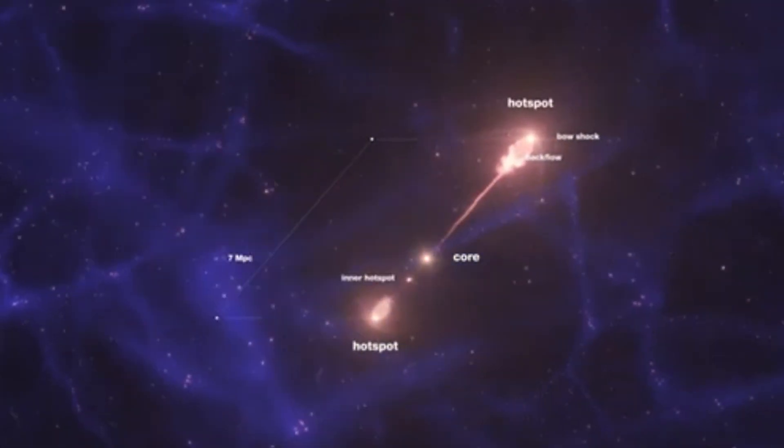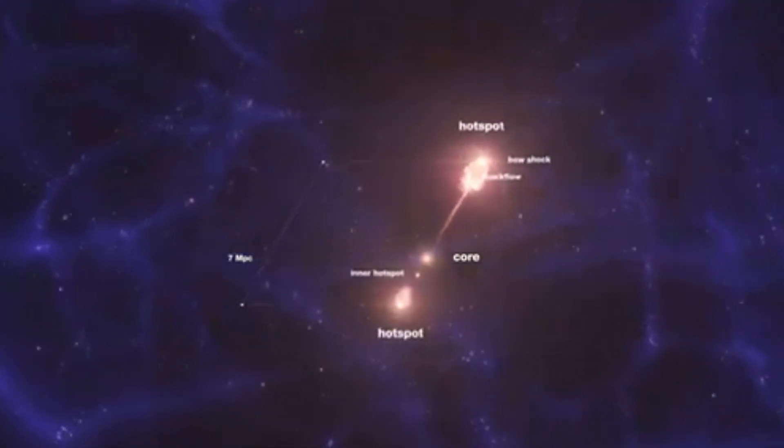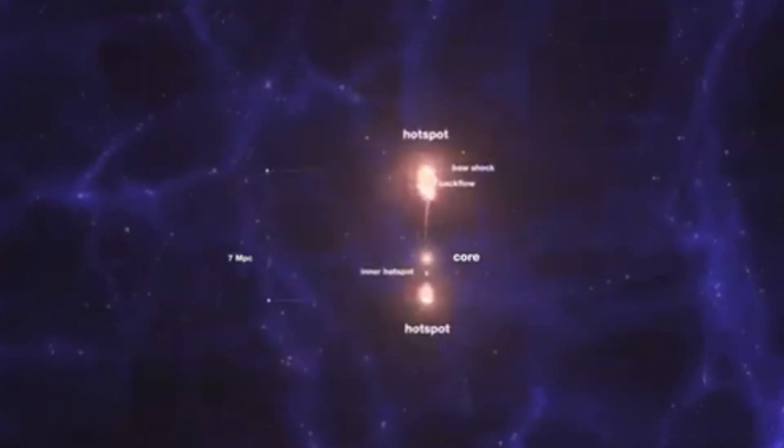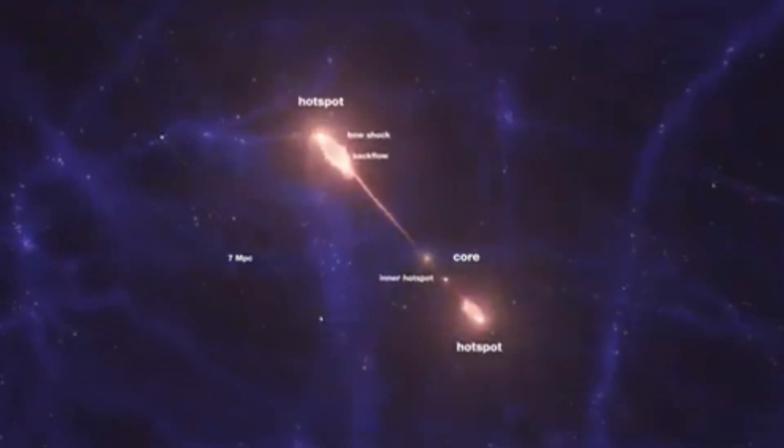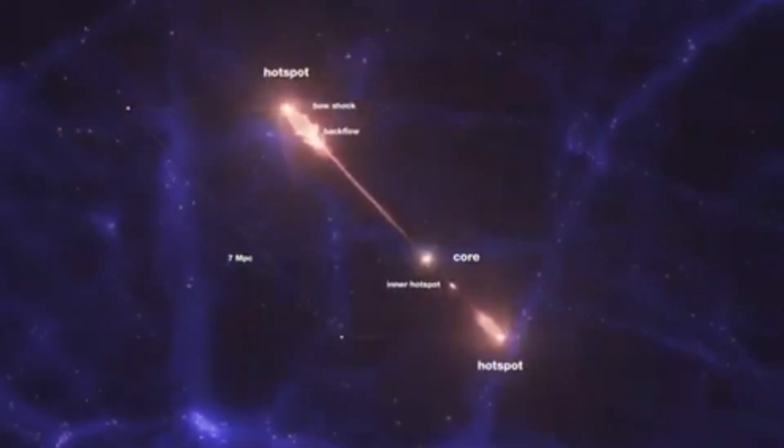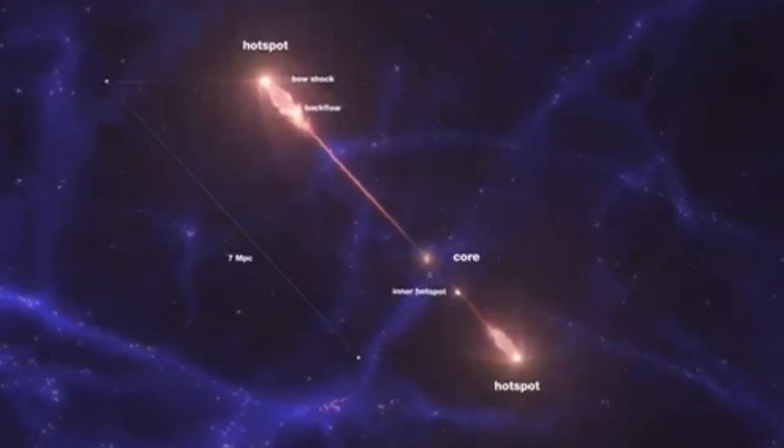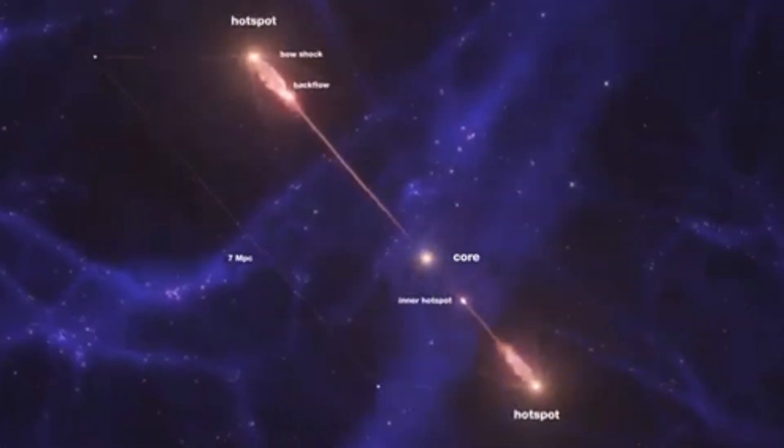Since these jets formed during a time when the universe was much younger, it's worth mentioning that back then, the cosmic web, the interconnected filaments that connect galaxies, was closer together. This means that Porphyrion jets, which formed when the universe was around 6.3 billion years old, had an even bigger reach, affecting more of the universe than jets we see today.